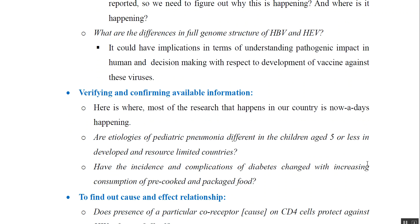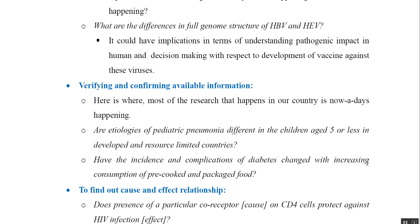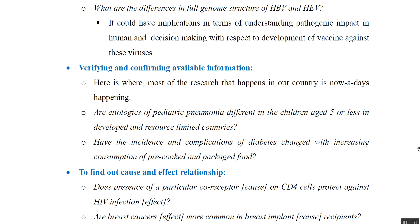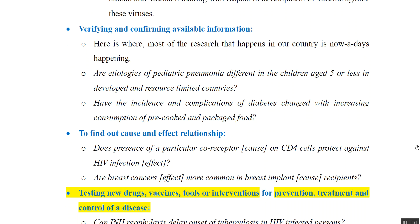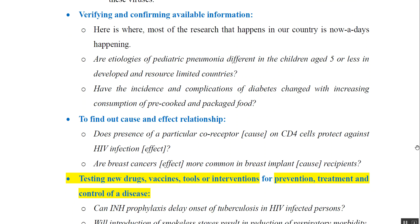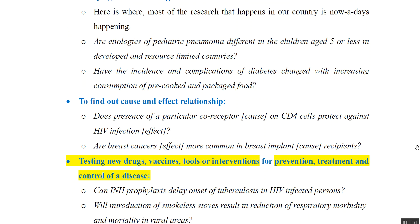The next objective is to find out cause-and-effect relationships. For example, does the presence of a particular co-receptor on CD4 cells protect against HIV infection? Are breast cancers more common in breast implant recipients? So we are trying to establish a relationship between cause and effect. The next objective is testing new drugs, new vaccines, new tools, or new interventions for prevention, treatment, or control of disease. For example, can isoniazid prophylaxis delay the onset of tuberculosis in HIV-infected persons? Will introduction of smoke-cleanse measures result in reduction of respiratory morbidity and mortality in rural areas?